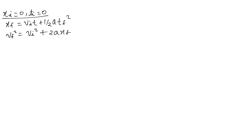This is true and not really a problem — we can always remodel our problems so that xi is zero and ti is zero. In fact, most of the time you'll be given xi equals zero and ti equals zero, or you can make them zero. The third equation is vf equals vi plus a·t.